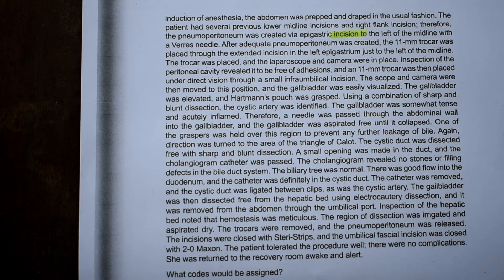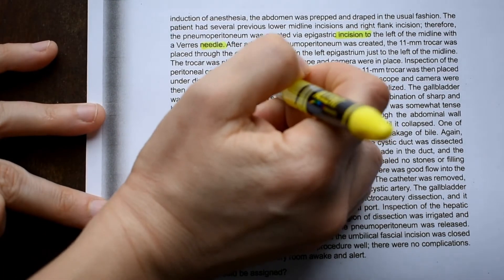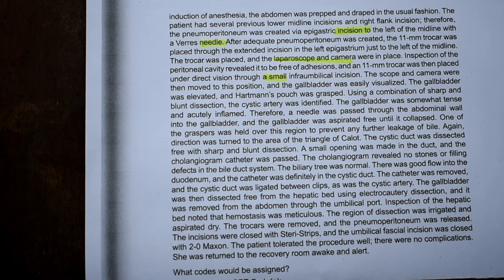Right now they're just talking about a midline incision with a needle. Inspection of the peritoneal cavity revealed it to be free of adhesions, and an 11-millimeter trocar was then placed under direct vision through a small infraumbilical incision. So again we have a small incision and also with them using the laparoscope, I'm going to stick with percutaneous endoscopic for right now — we'll see what else they do. The scope and camera were then moved to this position and the gallbladder was easily visualized, so we know they're looking at the gallbladder, but so far they're just inspecting. Our body part could be gallbladder unless they move on to a different body part to actually do some of the work.